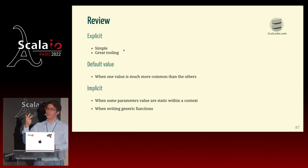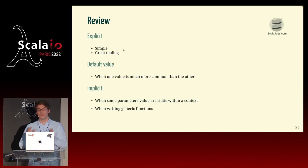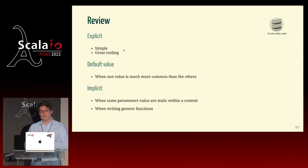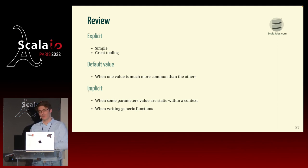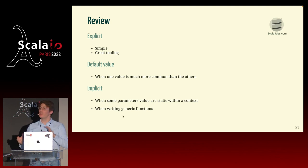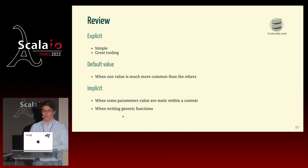So to review: you have mainly three ways to define parameters in Scala. Explicit — use it 99 if not 100% of the time; it's simple, works great, and we have great tooling. Default values — when you know one value is much more common, or to embed domain-specific knowledge. And implicit — a good pattern for the environment pattern (within a certain scope all these arguments are static), or for writing generic functions and constraining their genericity with type classes. Those are the two good use cases for implicit parameters.